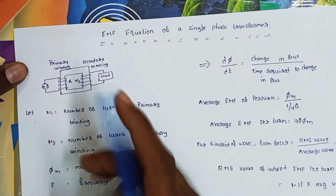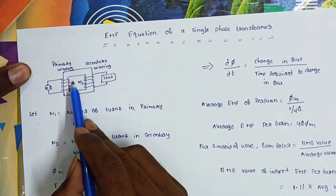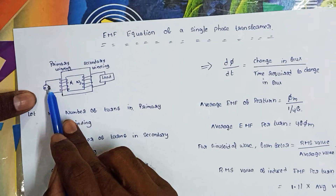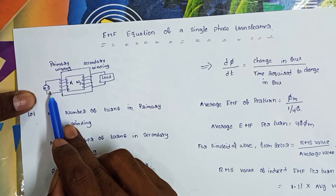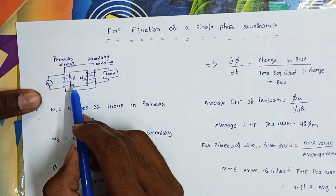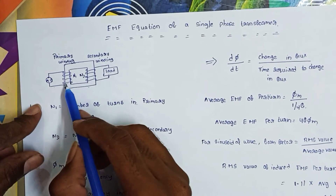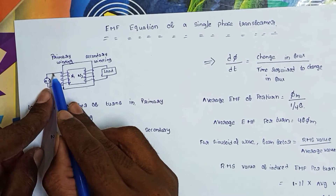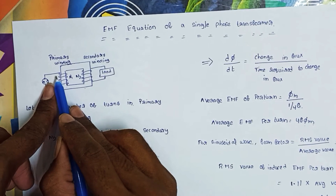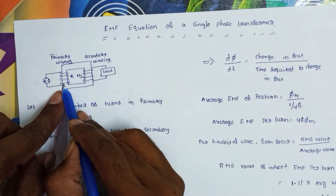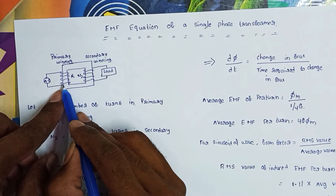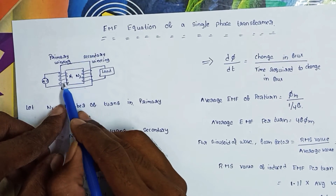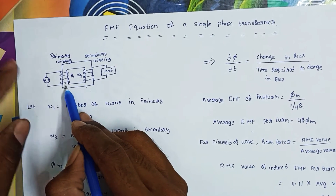Here we can see a transformer with primary winding and secondary winding. In a transformer we always give an AC supply only. The primary winding is excited by an alternating voltage and it circulates alternating current, which produces an alternating flux in the primary winding. This flux is linked with the primary winding.